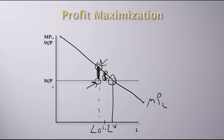We'll keep moving toward that profit-maximizing point. If you go past it, you'll be paying more to the worker than the worker gives you in output. Going past this point means you're losing money, because the worker is costing you more than they're giving you in return.